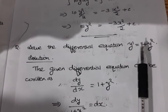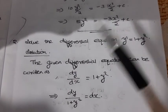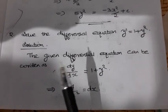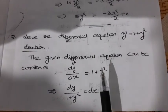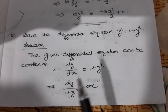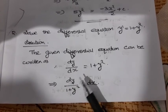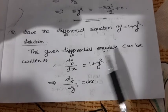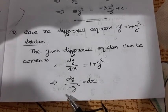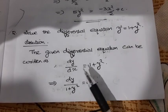Next question: solve the differential equation y' = 1 + y². First, we separate the variables. That is, dy/dx = 1 + y². Then y terms and x terms are grouped together, giving dy / (1 + y²) = dx. This is a variable separable form.